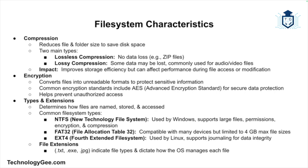Common file system types include NTFS (New Technology File System), used by Windows and supporting large file sizes, permissions, encryption, and compression. Then we have FAT32 (File Allocation Table 32), an older file system compatible with many devices but limited to a maximum file size of 4 gigabytes. Then we have ext4 (Fourth Extended File System), a common Linux file system that supports journaling for data integrity. File extensions like .txt, .exe, or .jpg indicate file types and determine how the operating system handles each file.